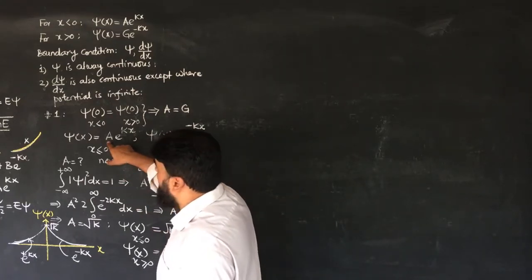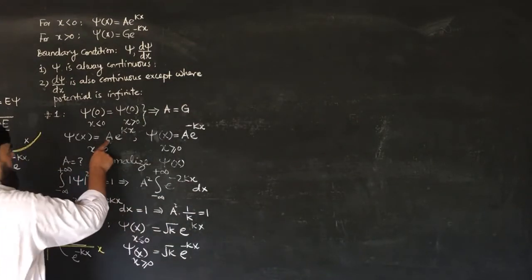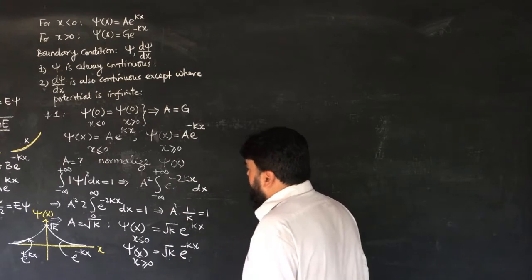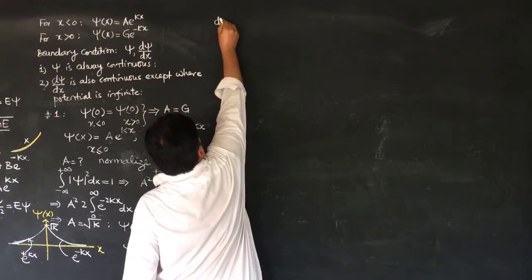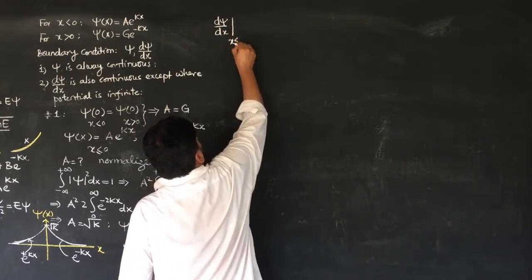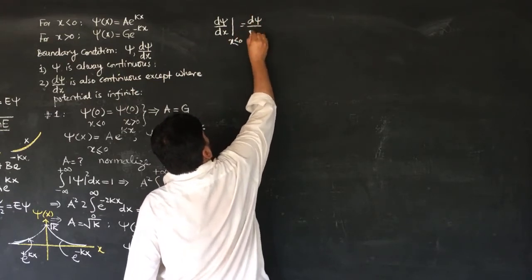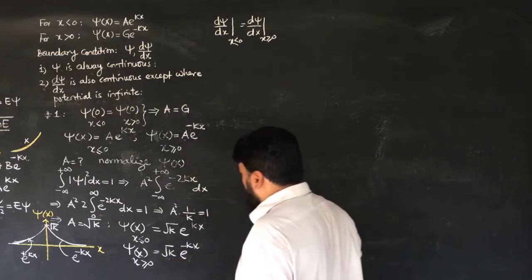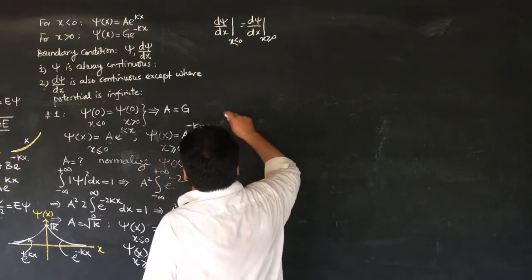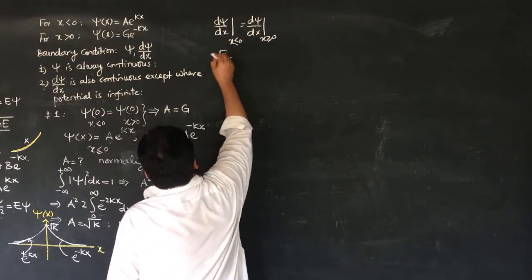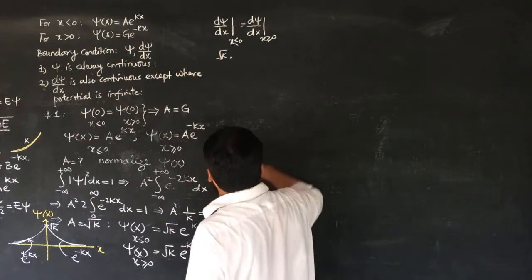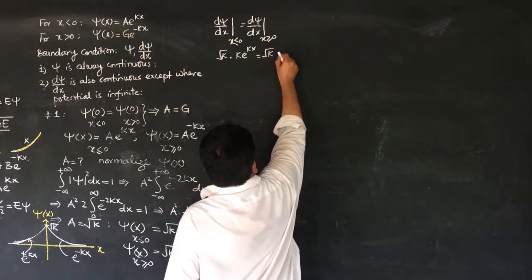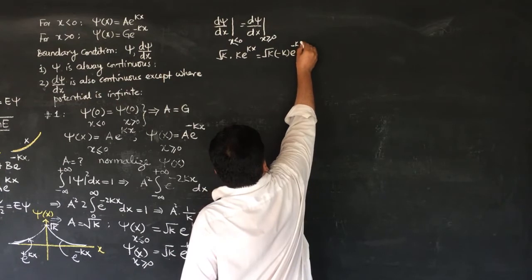If I take the derivative of this, then d ψ/dx for x ≤ 0 will be equal to d ψ/dx for x ≥ 0. If I take the derivative for x ≤ 0, it will be √k · e^(kx). So it will become k e^(kx), while the other side will become √k minus k e^(−kx).